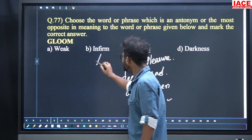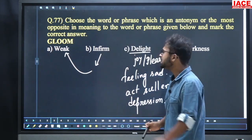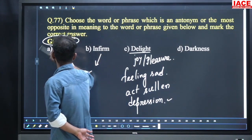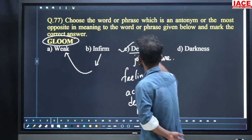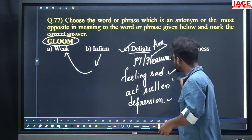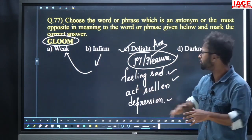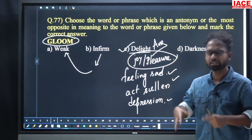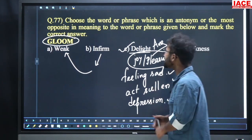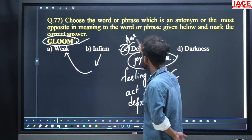Informed and weak mean lacking physical strength. So the word is gloom, and obviously option number C — delight — is the answer. Gloom means simply sad, sullen, depression; its opposite is when people are happy, joyful, no sadness. So for question 77, the word is gloom and option number C, delight, is the answer.